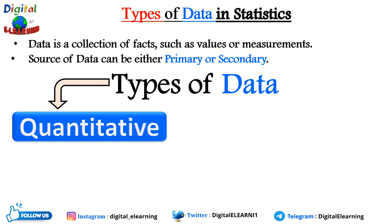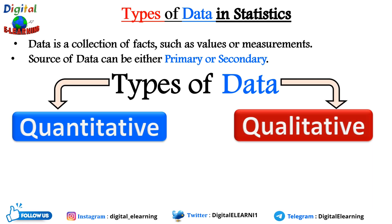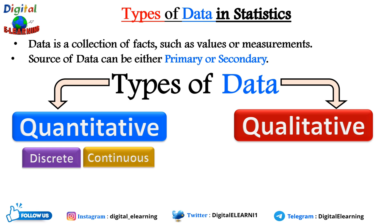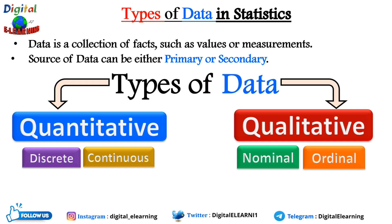You can also categorize data into two major categories: qualitative and quantitative. Quantitative data is objective, measurable, and numeric — it deals with quantities and answers questions like 'how much' and 'how many.' Qualitative data is subjective, descriptive, and often expressed in words — it describes something and answers questions like 'what kind' or 'why.' Quantitative data is further divided into discrete and continuous data, while qualitative data is divided into nominal and ordinal data.